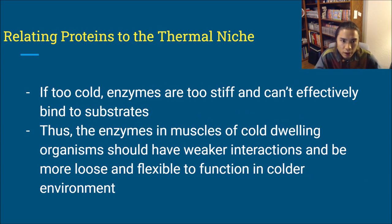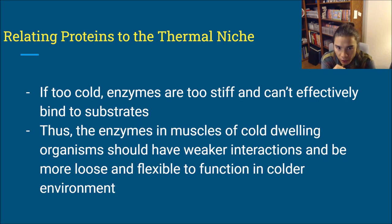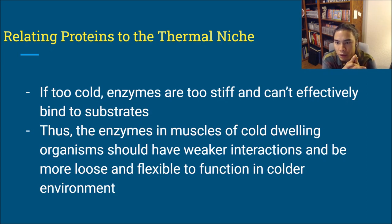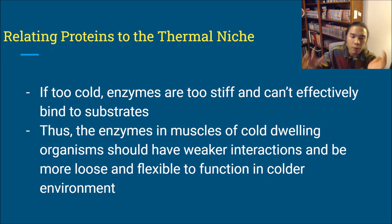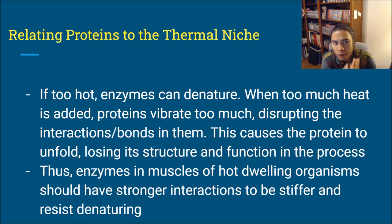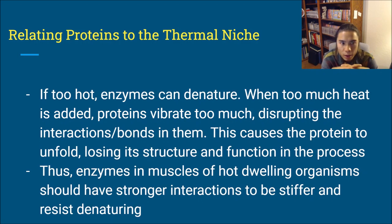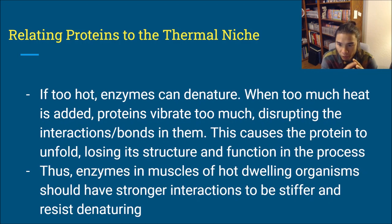You'd logically expect to find organisms with higher CT maxes in warmer environments — their proteins enable them to function better in the warmer environment. Organisms with lower CT mins are found in colder environments because their proteins allow them to survive colder temperatures. Proteins are always moving and operate by being flexible enough to bind using their binding site. If too cold, proteins are too stiff and can't effectively bind substrates. Enzymes of cold-dwelling organisms should have weaker, less rigid interactions so they can be more loose and flexible. Conversely, when it's too hot an enzyme can denature — split apart — so enzymes of hot-dwelling organisms should be much stronger and stiffer to resist denaturing.